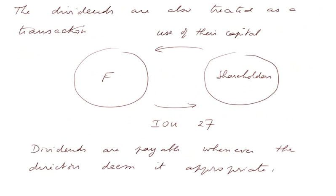The dividends are also treated as a transaction. Here is the firm, here is the rest of the world — more specifically the shareholders. For the use of the capital put in by the shareholders, the firm pays every year some dividends, and this year it will pay with an AU of 27. As we saw, they are payable whenever directors deem it appropriate.